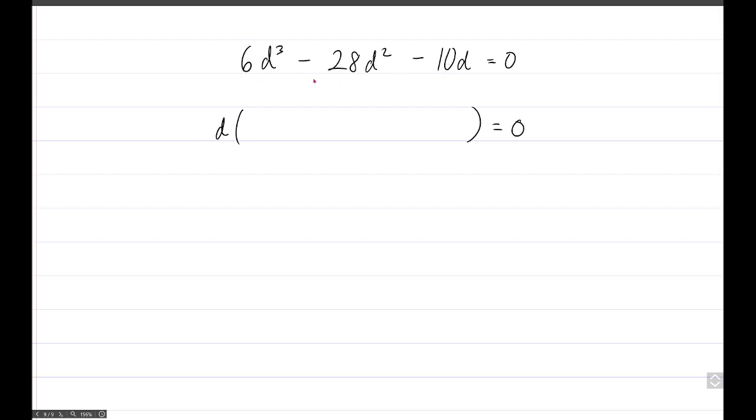You can also factor out a number. You can factor out the number 2 from all of these, and what will be left will be 3d squared minus 14d minus, let's see, 5.